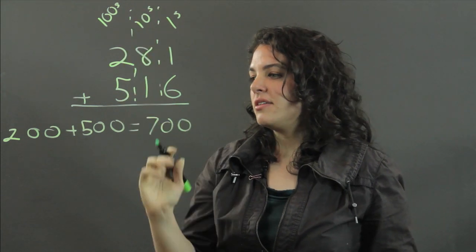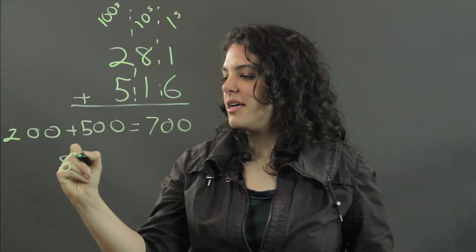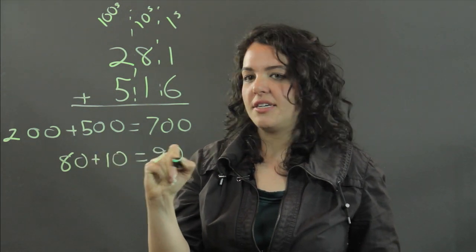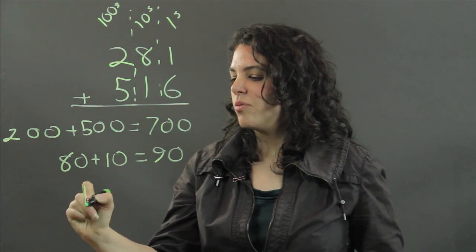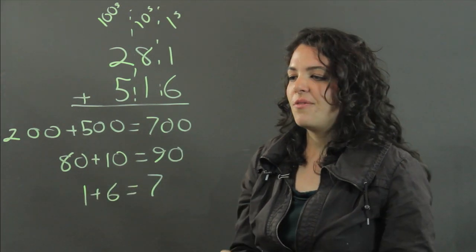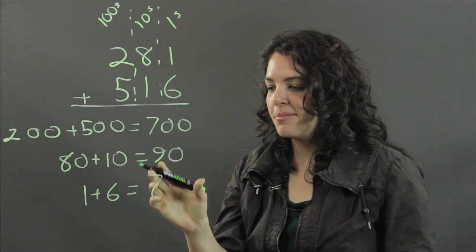Then we add the tens. We have 80 plus 10 equals 90. And then we add our ones. 1 plus 6 equals 7. And if you read down from top to bottom,